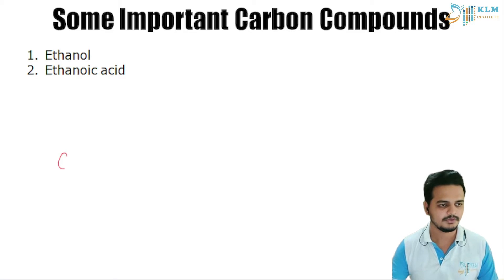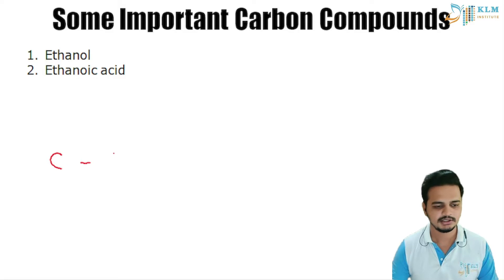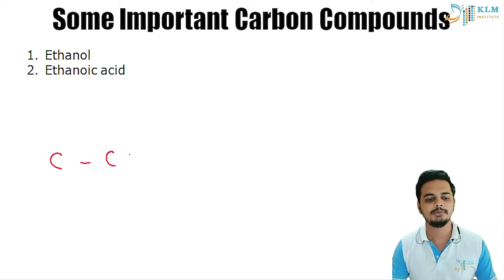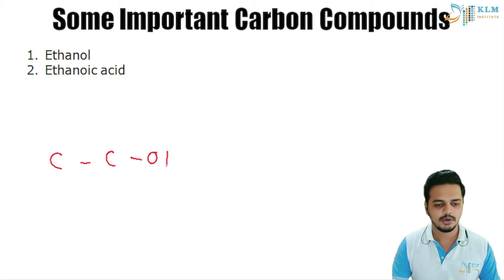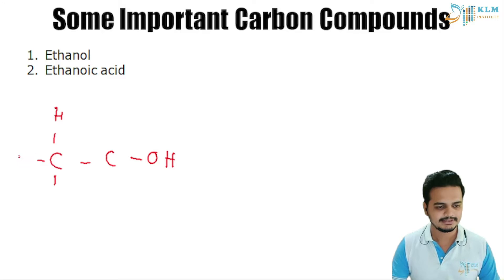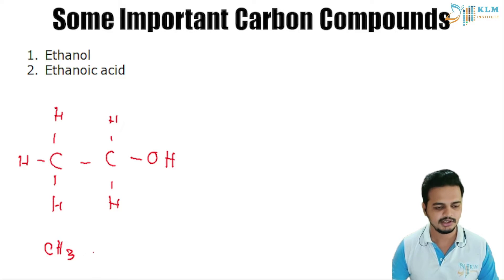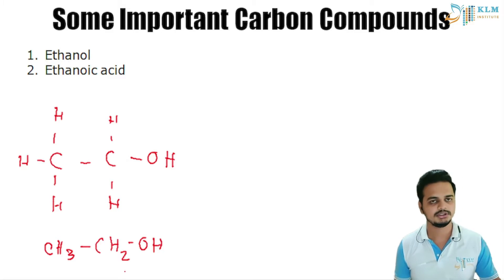Let's write the structure of ethanol. It has two carbon atoms, so we'll draw two carbon atoms first: C single bond C. The suffix '-ol' tells us that an OH group is present. Now let us fill the valences with hydrogen atoms. You can also write it as CH3-CH2-OH. This is ethanol.